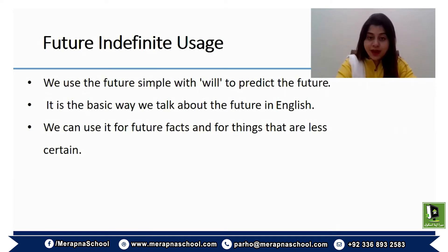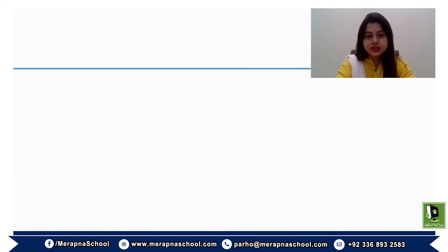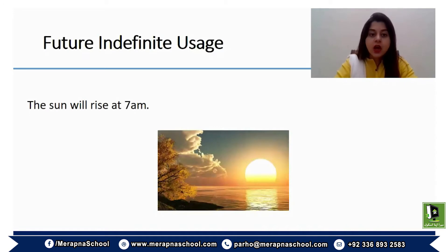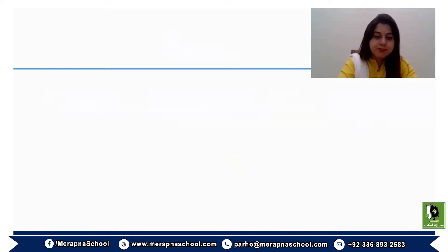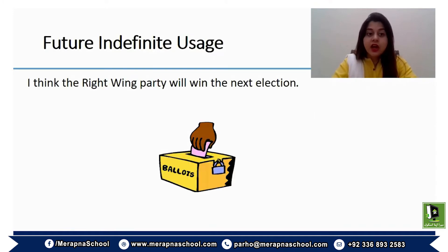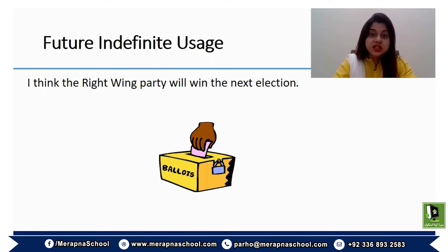We can use 'will' for future facts and for things that are less certain. For instance, 'The sun will rise at 7 a.m.' — we are predicting sunrise based on the time of year. Another example: 'I think the right-wing party will win the next election' — here, based on current information, we are predicting the election outcome.